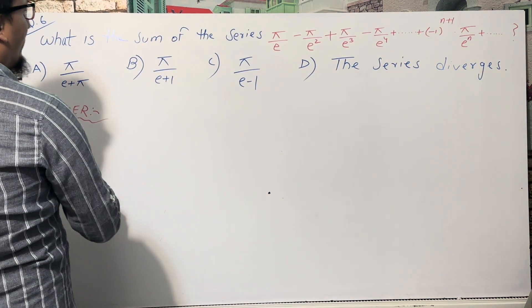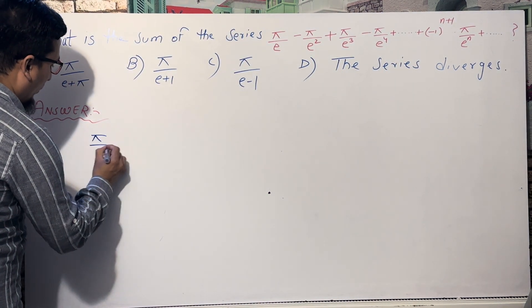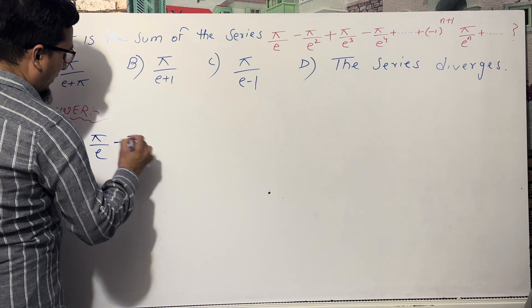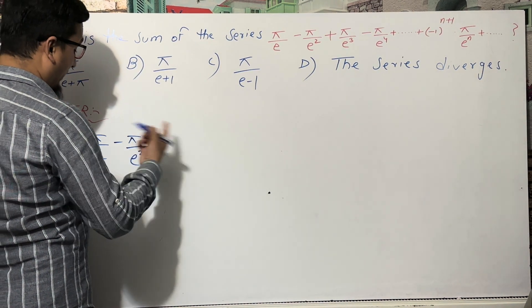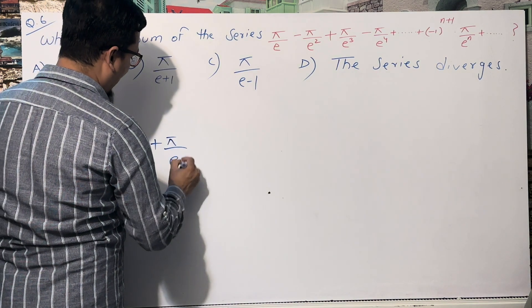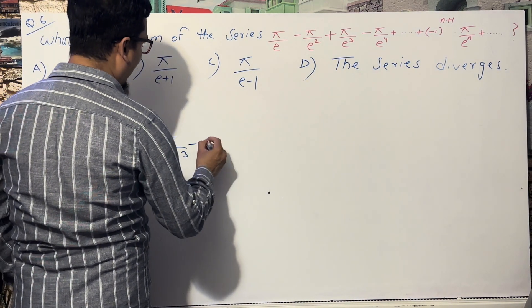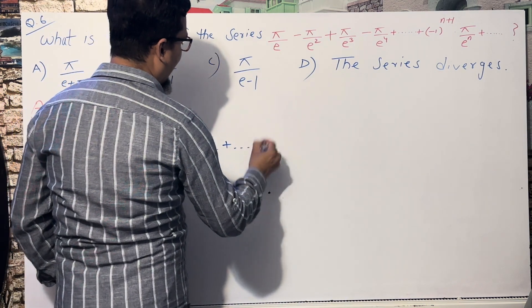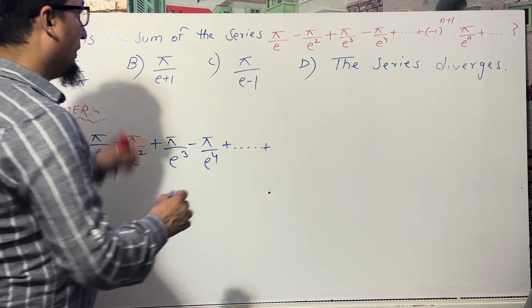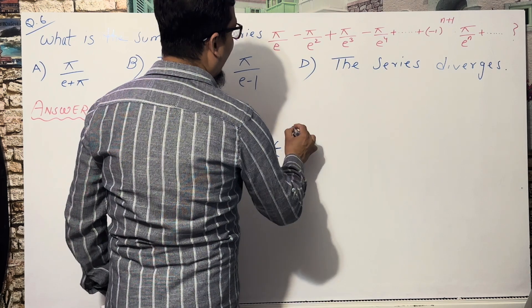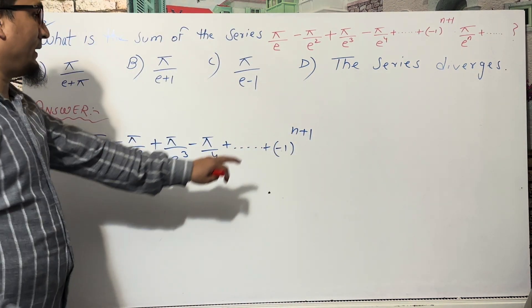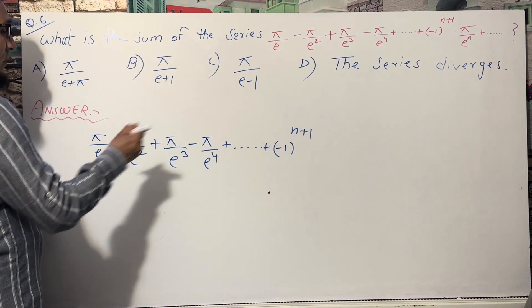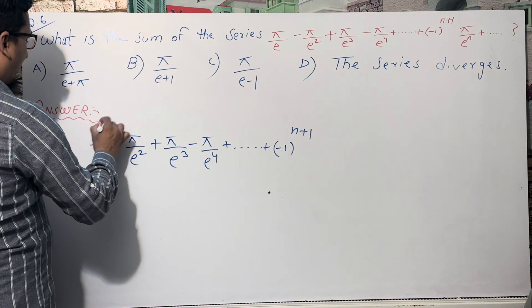Let me identify what type of series this is. The first term π/e is positive, the second term −π/e² is negative, then +π/e³, then −π/e⁴, and so on. I'm going to write the general term as (−1)^(n+1) · π/eⁿ, where n is the number of terms.